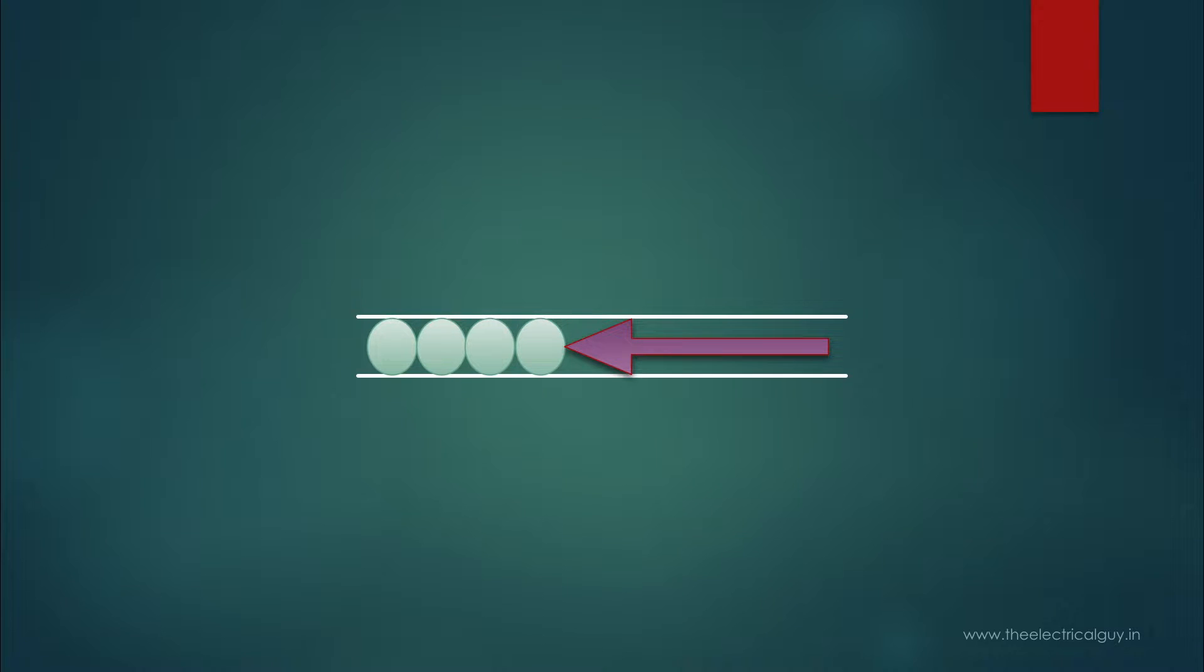Opposition offered by material to the flow of electrons is what we call resistance. Some materials offer very few resistance to the flow of electrons and we call such materials conductors. And some materials offer high opposition to the flow of electrons and we call such materials insulators.